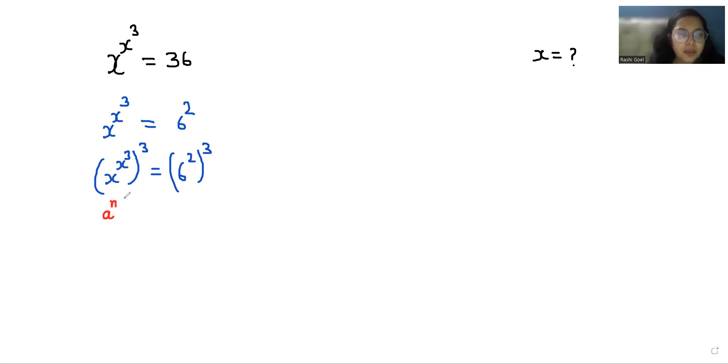a^n power m we can write it as a^(nm). So it becomes x^3 power x^3 equals 6^2 power 3. Now I'm taking a substitution and put x^3 = a.